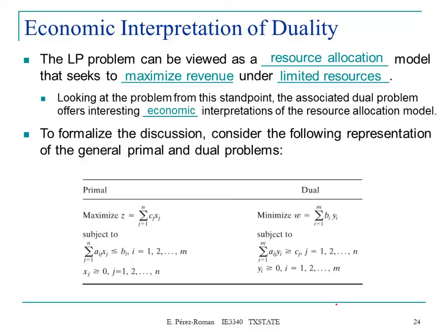To formalize the discussion, let's consider the following representation of the primal and dual problems. I assume you are familiar with this notation, so this is the summation from j equals 1 to n. What we are doing here is representing the models using math. You are maximizing the sum of the cost and your decision variables, and you have some restrictions where bi is your right-hand side. A is the coefficients with your decision variables.